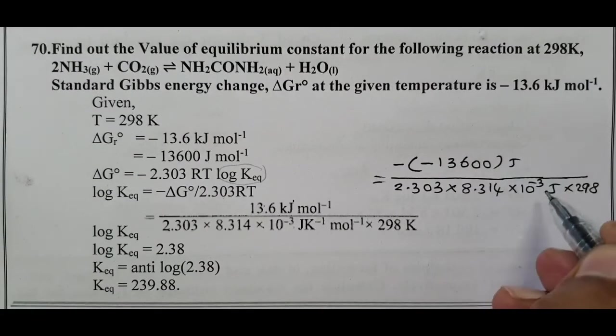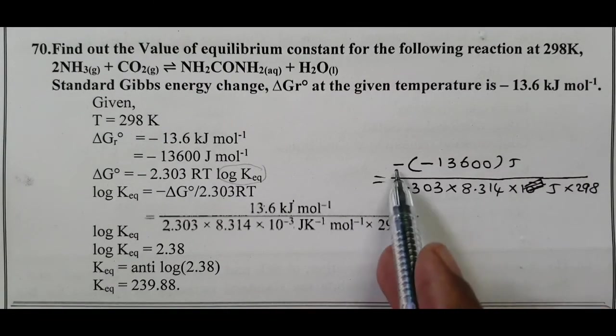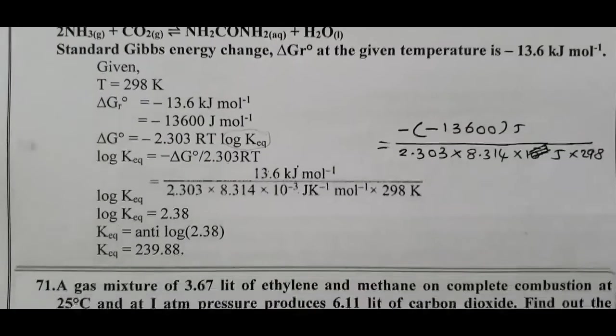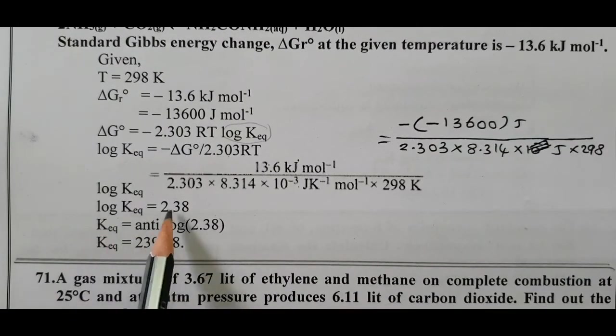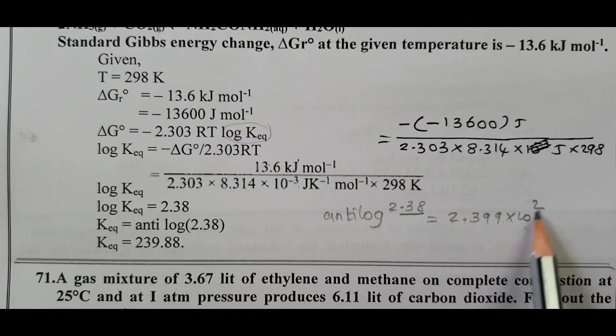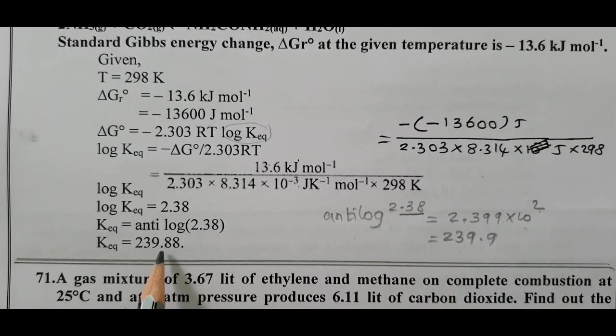Rearranging: log Kₑq = -ΔG°/(2.303RT). Substituting values: log Kₑq = -(-13600)/(2.303 × 8.314 × 298) = 13600/(2.303 × 8.314 × 298) = 2.38. Taking antilog: Kₑq = antilog(2.38) = 10² × 2.39 = 239.88, approximately 240.